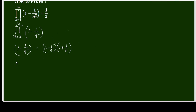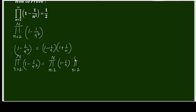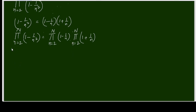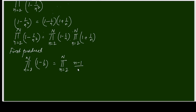So the whole product from n equals 2 to N of (1 - 1/n²) can be written as the product from n equals 2 to N of (1 - 1/n) times the product from n equals 2 to N of (1 + 1/n). Taking the first product: the product from n equals 2 to N of (1 - 1/n) equals the product of (n - 1)/n.